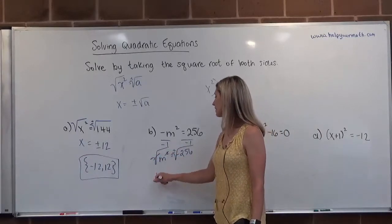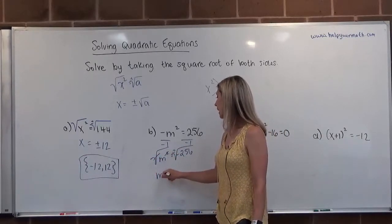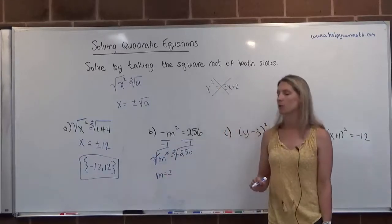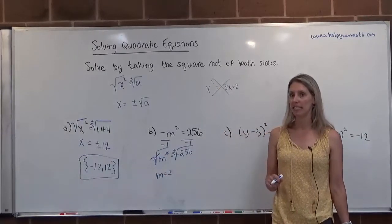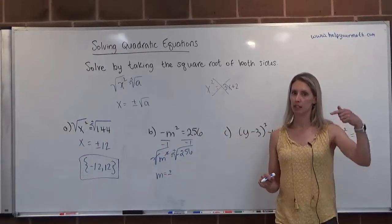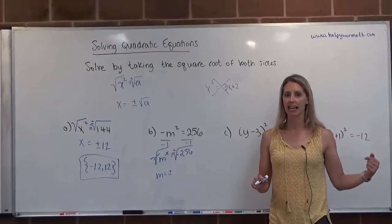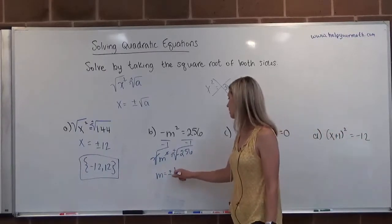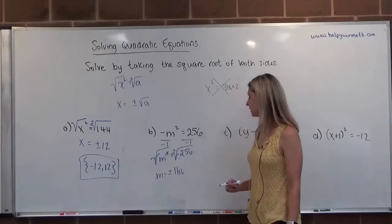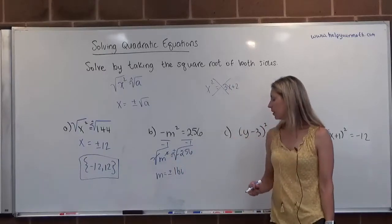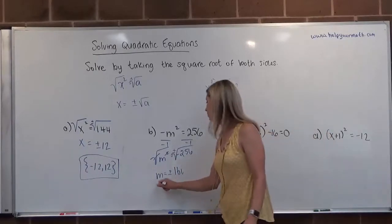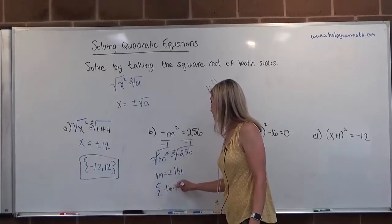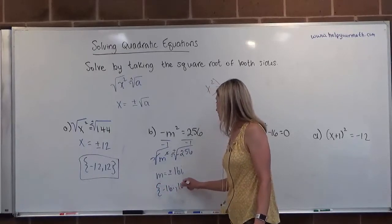The square and the square root cancel, and we're left with m equals plus or minus the square root of negative 256. That's the square root of negative 1, which is i, times the square root of 256, which is 16. So it would be 16i. We have two solutions here and they are both imaginary: negative 16i and positive 16i.